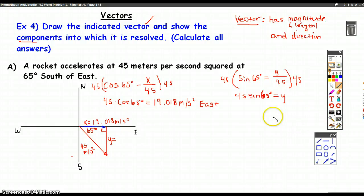40.784. So 40.784 meters per second squared. And that is south.